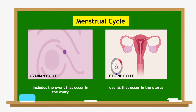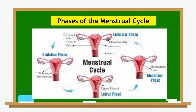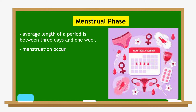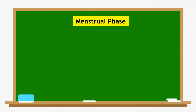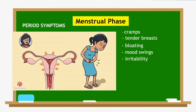These two cycles are closely related to each other and are referred to together as the menstrual cycle. The menstrual cycle has four phases. First, we have the menstrual phase, with an average length between three days and one week. This is when menstruation occurs — the elimination of the thickened lining of the uterus through the vagina. Symptoms include abdominal cramps, tender breasts, bloating, mood swings, irritability, headaches, tiredness, and low back pain.